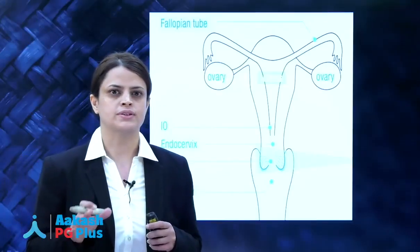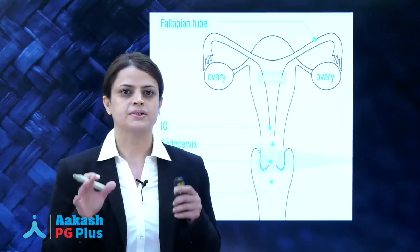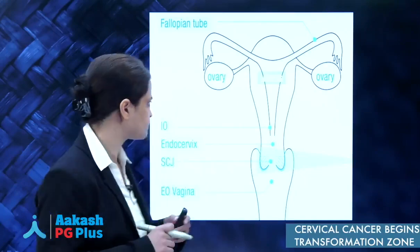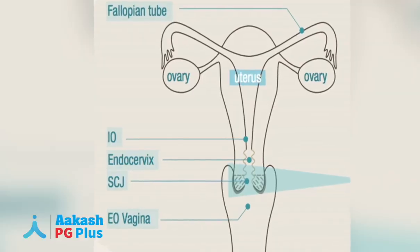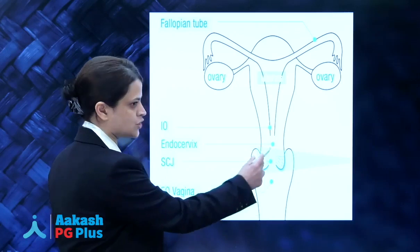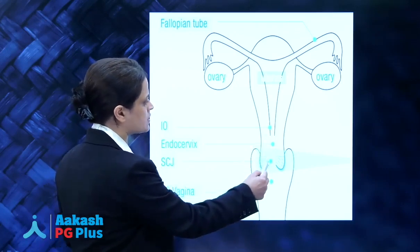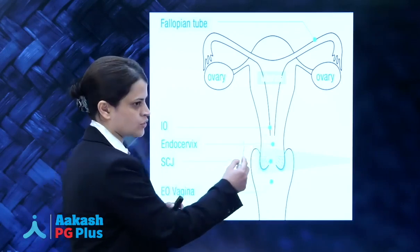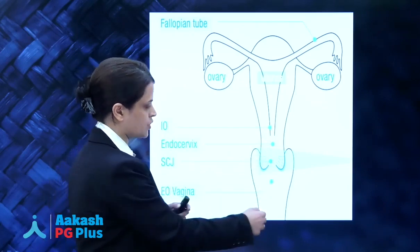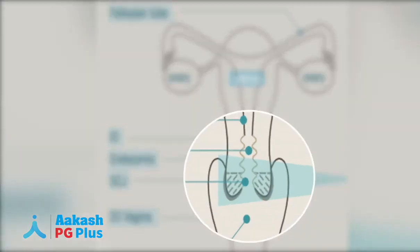The first important concept is that of the transformation zone, because that is where cervical cancer begins. Here we have a picture of the uterus showing the cervix and the vagina. The cervix consists of two parts: the endocervix and the ectocervix. The ectocervix is the part that projects into the vagina, also called the portio vaginalis.